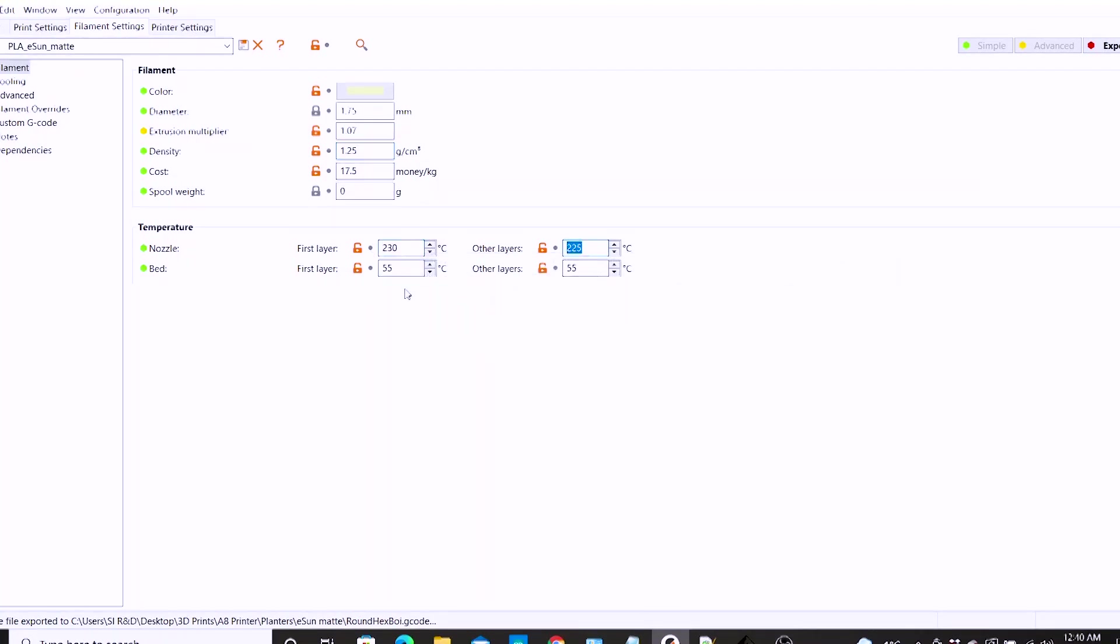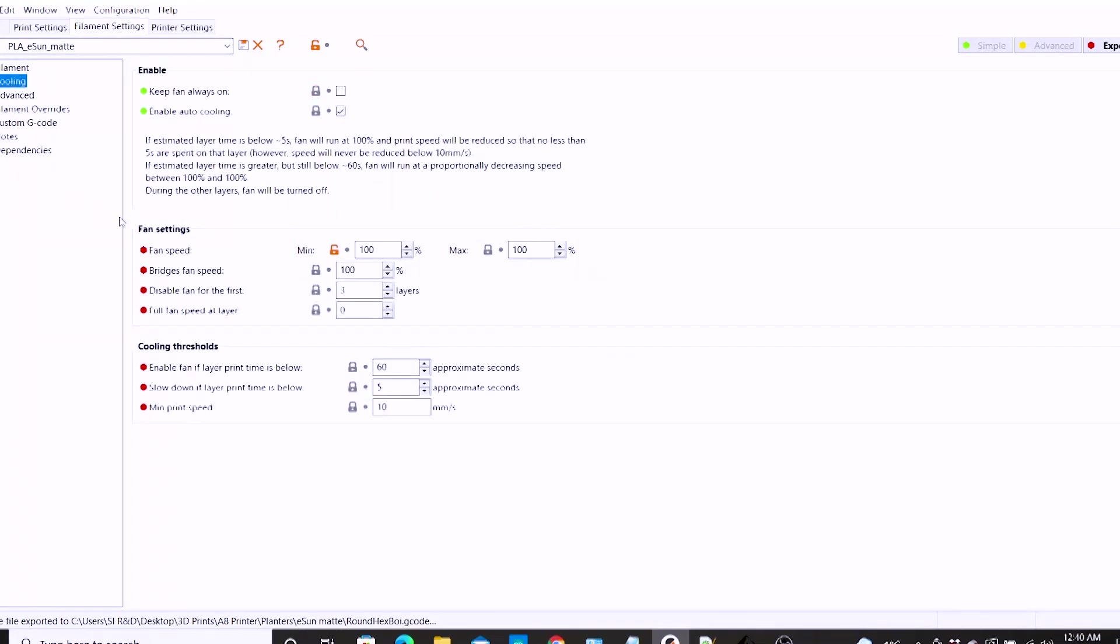First layer goes down at 230 degrees celsius. All other layers were printed at 225, and the heated bed was at 55 degrees, which I had mentioned earlier in this video.